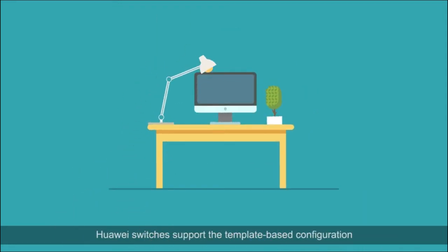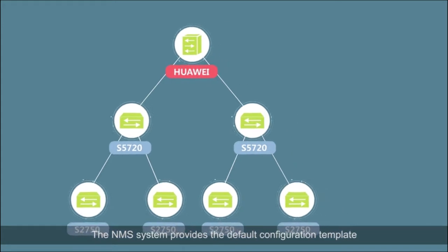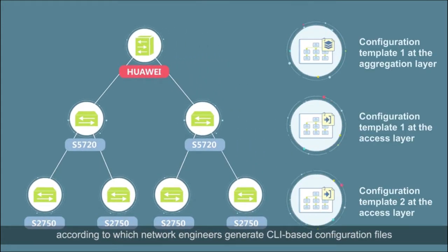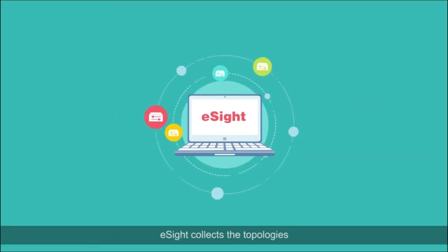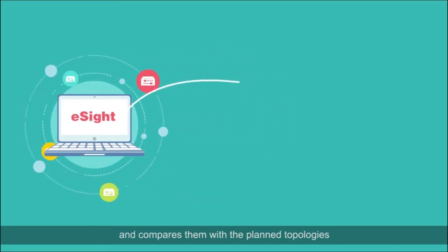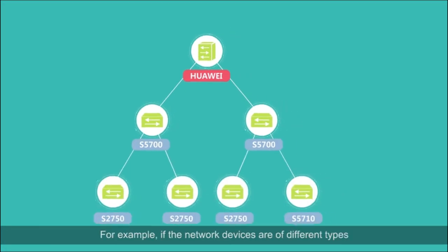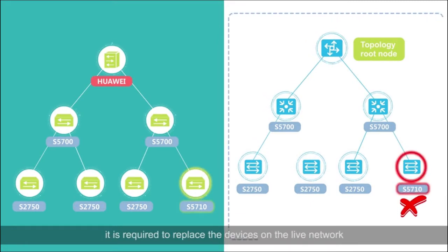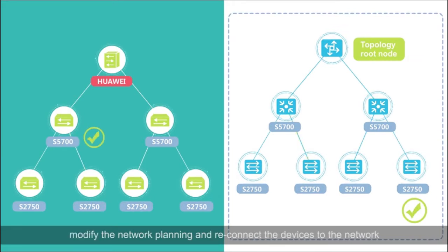Huawei switches support template-based configuration. The NMS system provides the default configuration template, according to which network engineers generate CLI-based configuration files and specify the device software packages and patch files. After network devices are deployed, eSight collects the topologies and compares them with the planned topologies. If there are any differences found, the system will prompt a message. For example, if the network devices are of different types, it is required to replace the devices on the live network. If the connection interfaces are inconsistent, modify the network planning and reconnect the devices to the network.